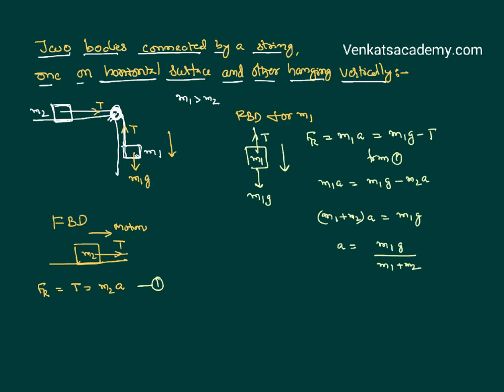We can substitute this acceleration from equation 1 and get the tension as M2A. A is M1G divided by M1 plus M2.